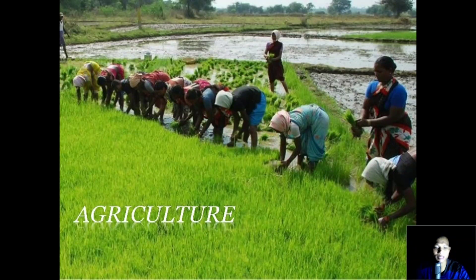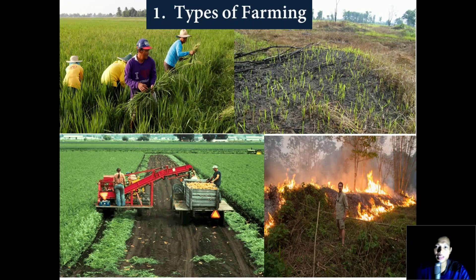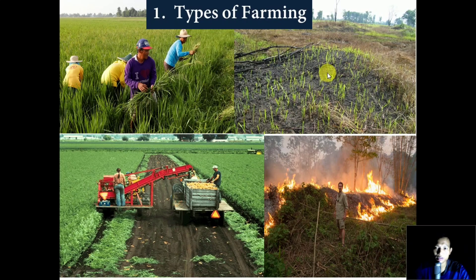Now we'll see the major topics we are going to cover under chapter 4. Firstly, types of farming — here we'll get to know of different farming systems which India follows. They are mainly divided into three types: primitive subsistence farming, intensive subsistence farming, and commercial farming. We'll discuss all of these in detail in the upcoming videos.